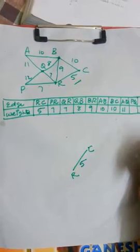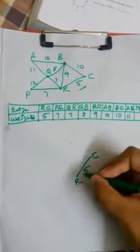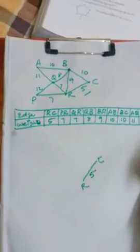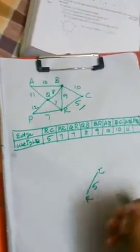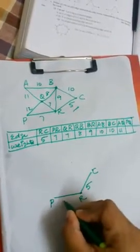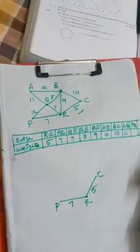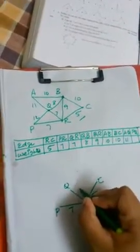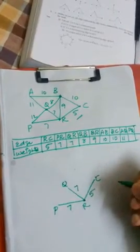So first minimal spanning tree edge is RC, I mean the vertices are R and C, so we draw RC of weight 5. Next while drawing, we must keep a note that the vertices which we draw should not form a loop. So next weight is PR.